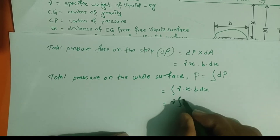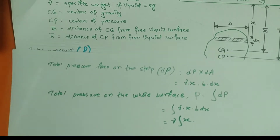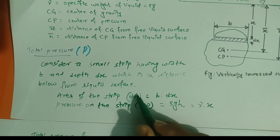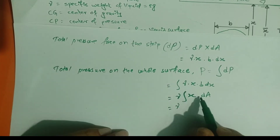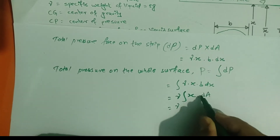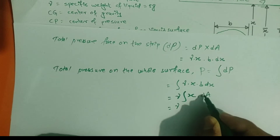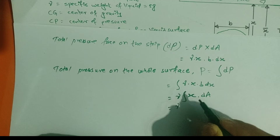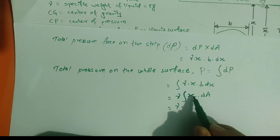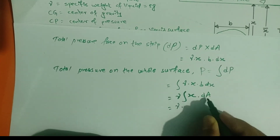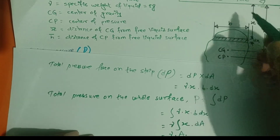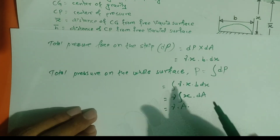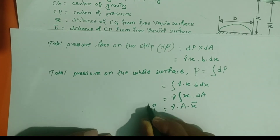Here, b·dx is the small area dA of the strip, so P = γ∫x·dA. The term ∫x·dA is the summation of the product of area and distance, which is called the moment of area of the whole figure. The distance x represents the distance from the CG to the liquid surface, so ∫x·dA = A·x̄. Therefore, total pressure P = γ·A·x̄.